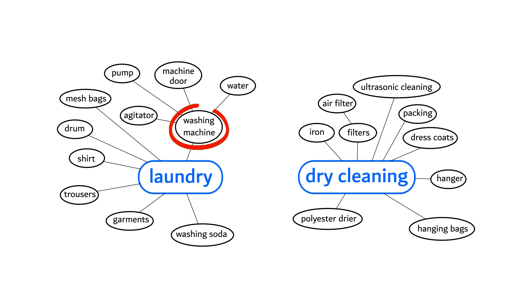For laundry services, I decided to use a washing machine door and water. For dry cleaning services, the most appropriate element is a hanger, because in the dry cleaning process all products like shirts or dress coats are hanged. According to me, a hanger is the best representation for dry cleaning services.